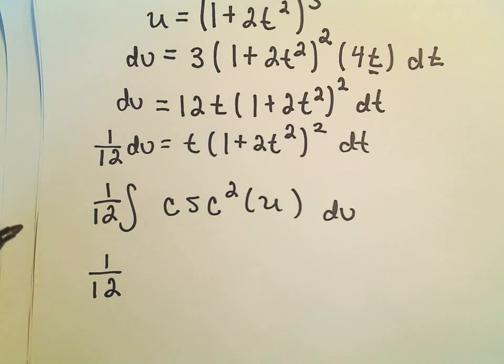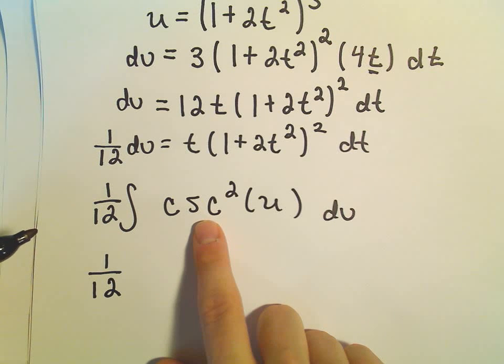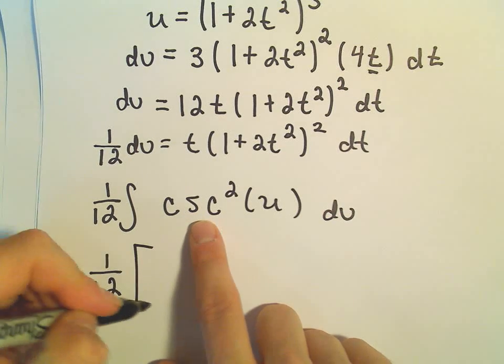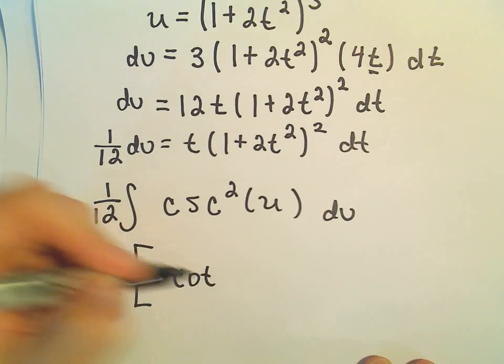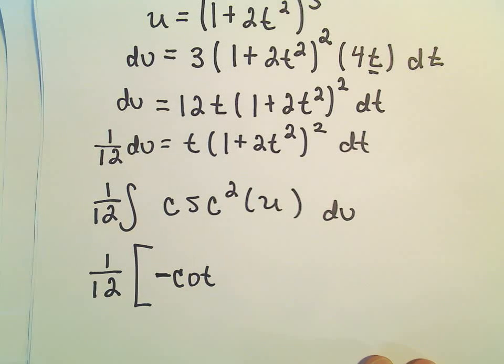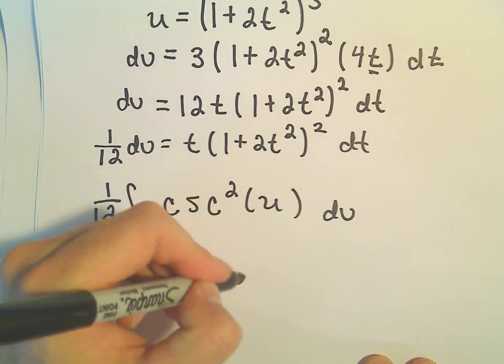So I'm thinking, whose derivative is cosecant squared? So I remember the derivative of tangent is secant squared. The derivative of cotangent is actually negative cosecant squared. So that means we'll need a negative cotangent of u.